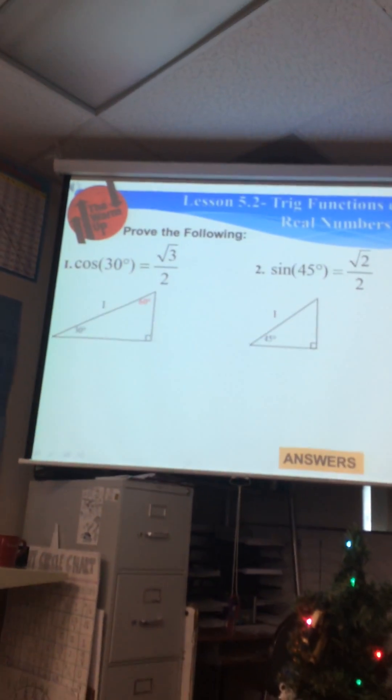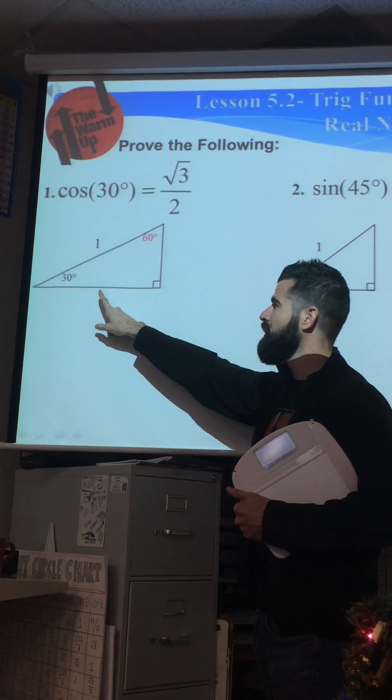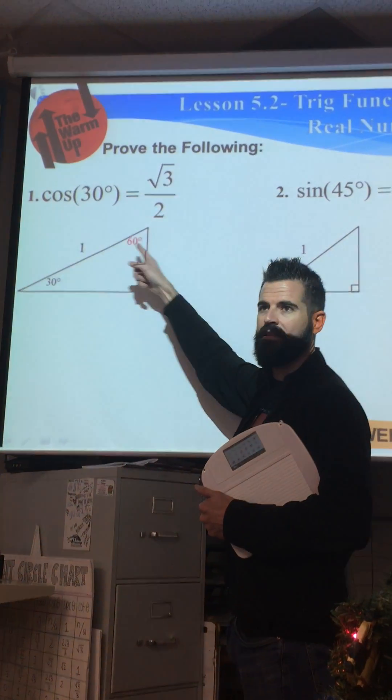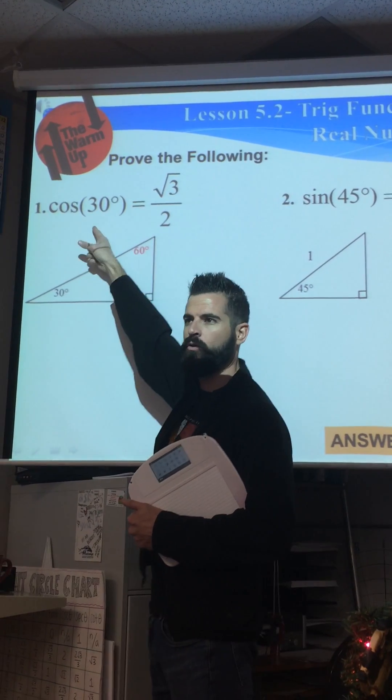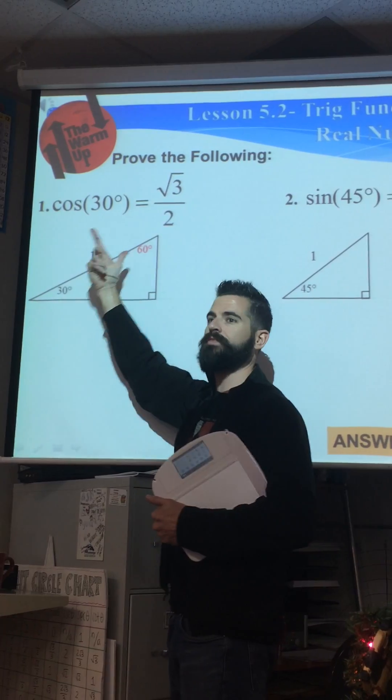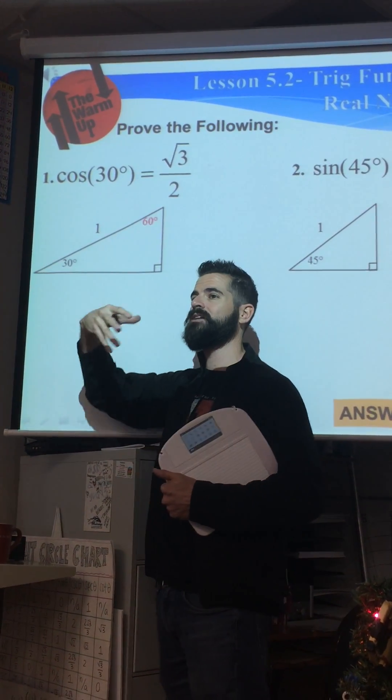Now listen, this is pivotal, because in order to go from cosine to whatever this side is, you could say this is a and b and this is c, but what's the relationship between a and cosine? Nothing. There is no relationship from the variable a to cosine.